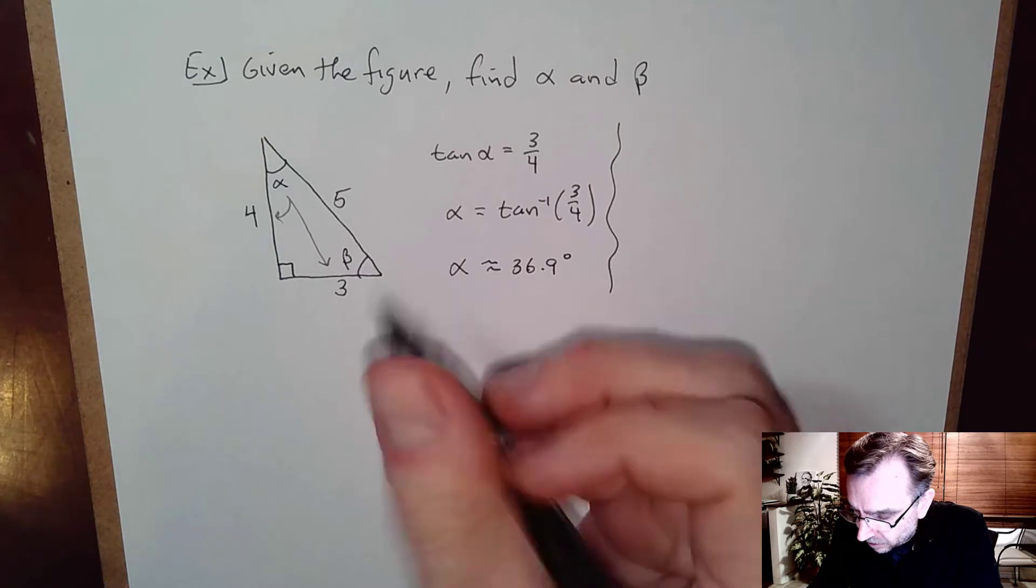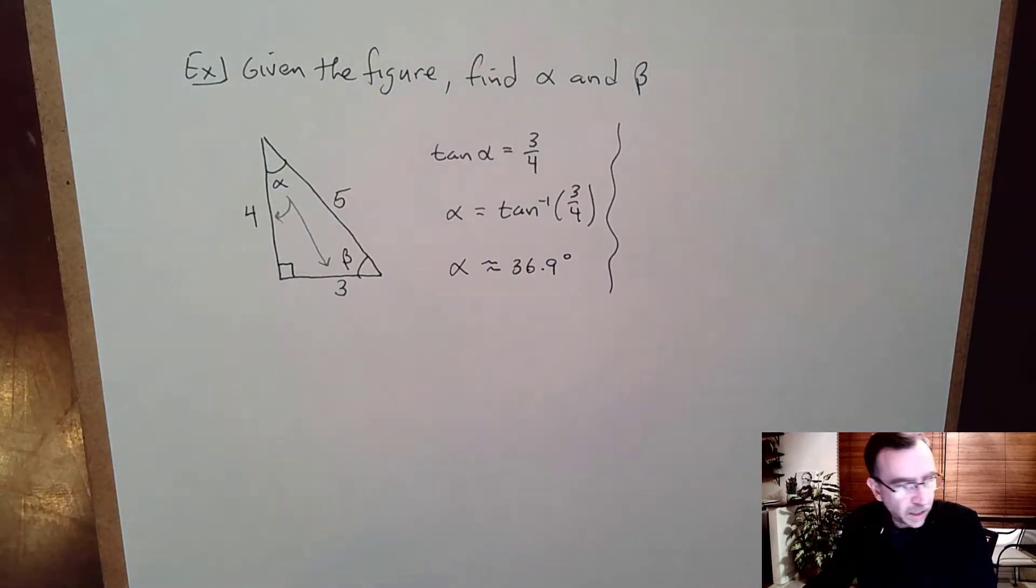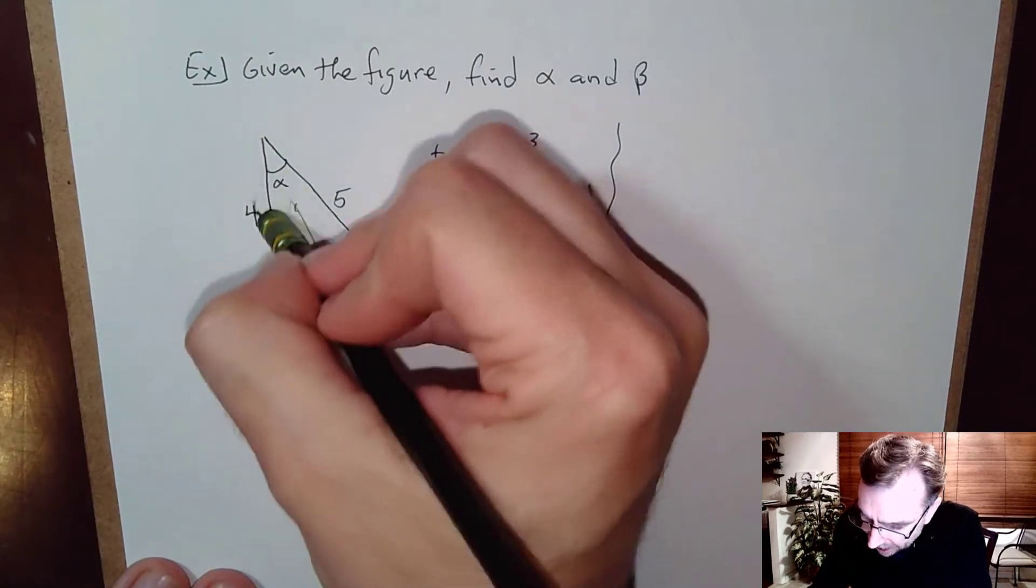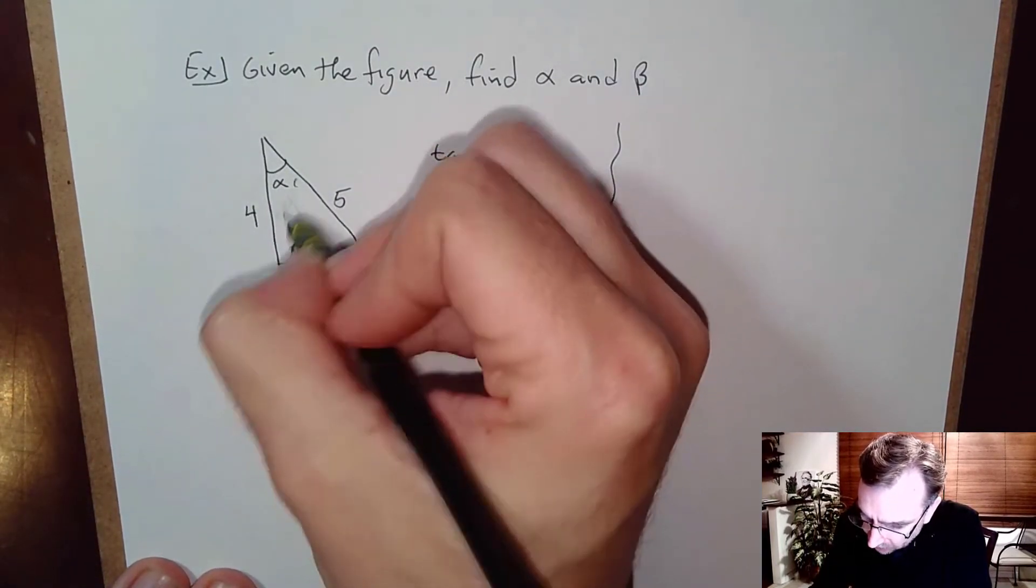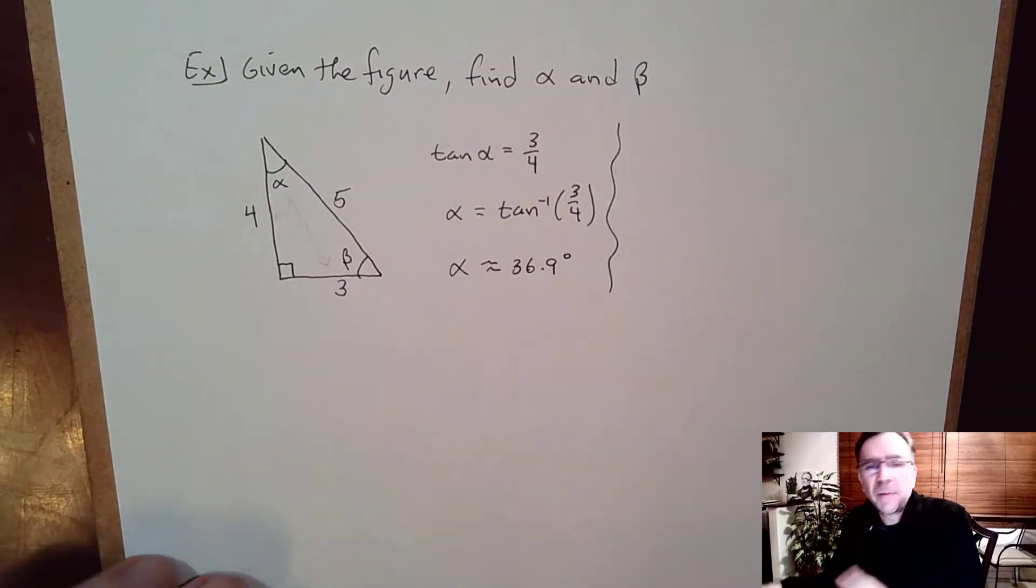So we found alpha, now we're going to find beta. Certainly we can use geometry, all the angles have to add up to 180 that would be pretty easy, but in this problem I want to use trig.